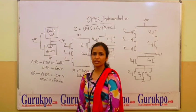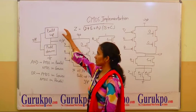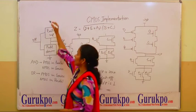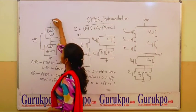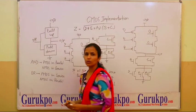To perform an equation in CMOS implementation, we firstly have to construct pull-up and pull-down network. Pull-up network is connected to VDD and pull-down network is connected to ground.